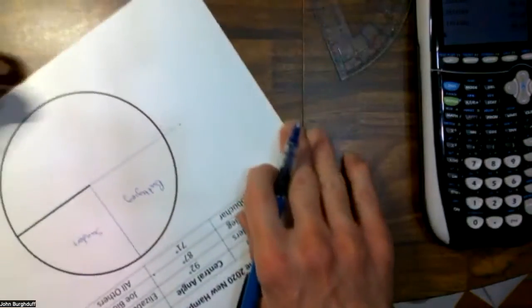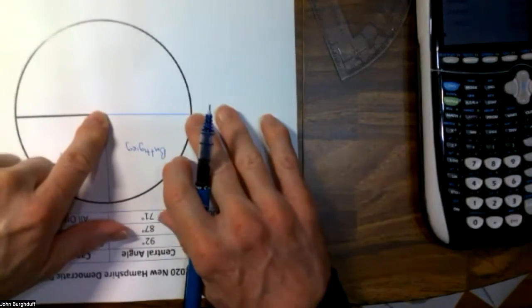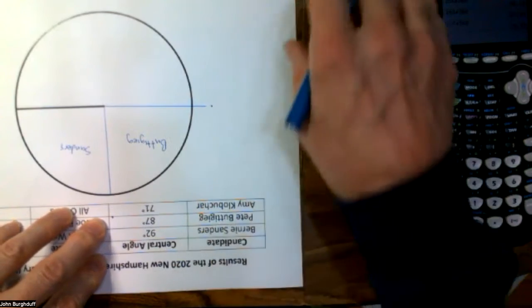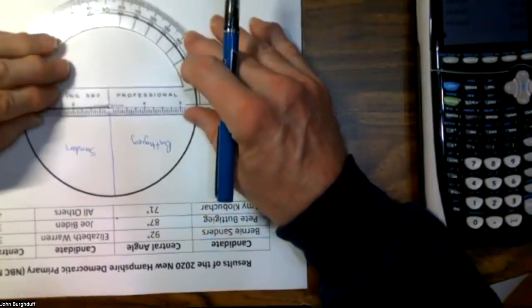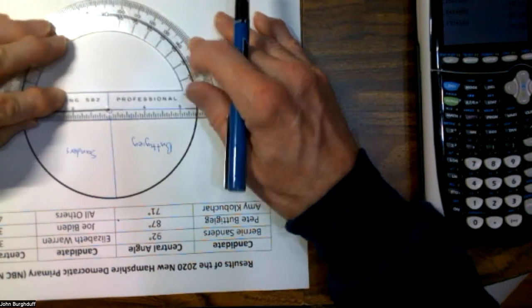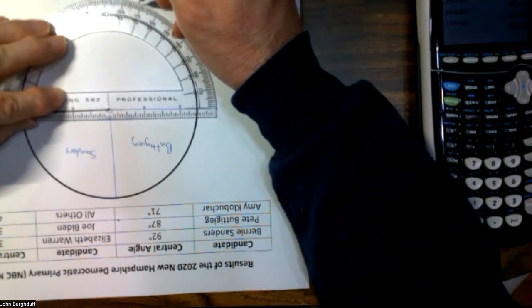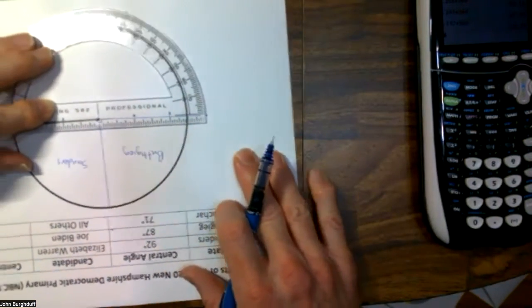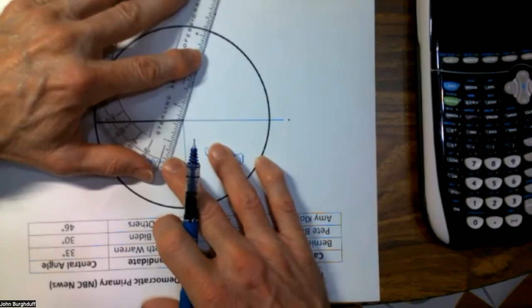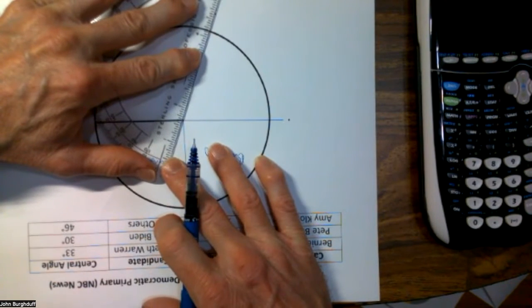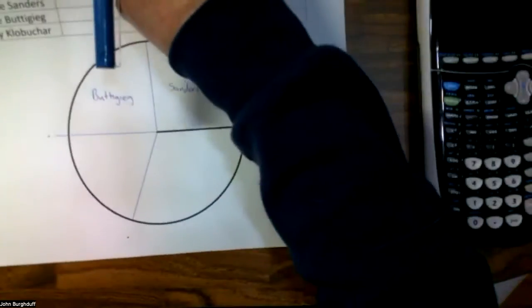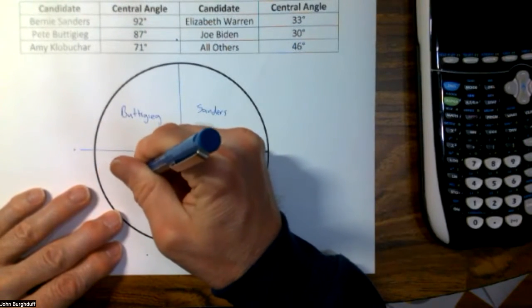Now turn the diagram again so that the line you just drew becomes the horizontal line. Measure the next angle, which is 71 degrees. Line that up with the center and locate 71 degrees right here. Connect the center with this point, not going outside the circle. Then turn that back around so we can label that region as the region representing the votes for Amy Klobuchar.